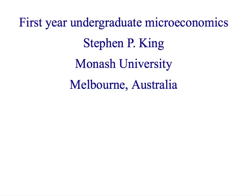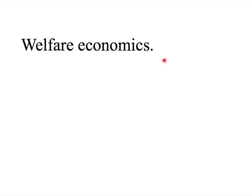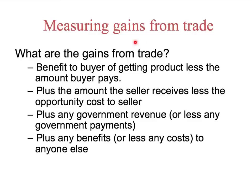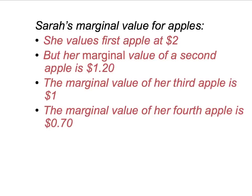Once again, welcome to first year undergraduate microeconomics. We're continuing our topic of welfare economics, measuring gains from trade, and concentrating on the gains from trade to the buyer — the benefit the buyer gets from the product less the amount the buyer pays. We've been looking at Sarah and Sarah's marginal values, which are given here. If you haven't seen them before, go back to the previous presentations.